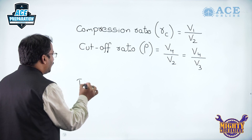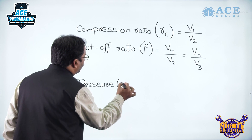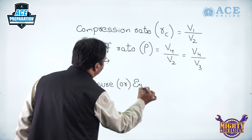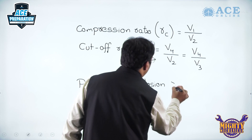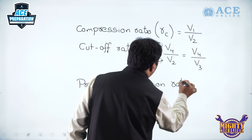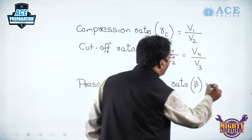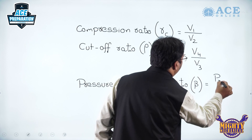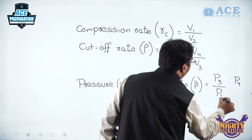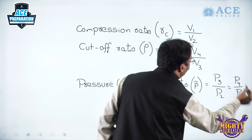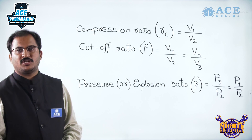We have the pressure or explosion ratio, denoted by β (beta), which equals the maximum pressure of the cycle P3 (or P4) divided by the pressure after compression P2. So P3 by P2, or equivalently P4 by P2, is the pressure or explosion ratio.